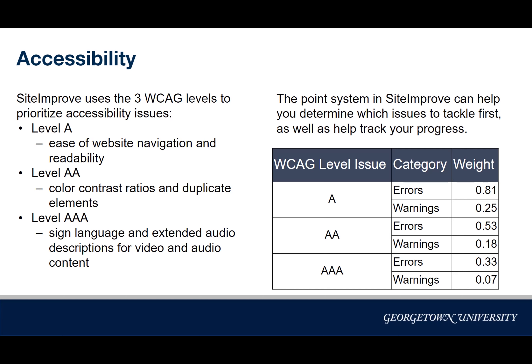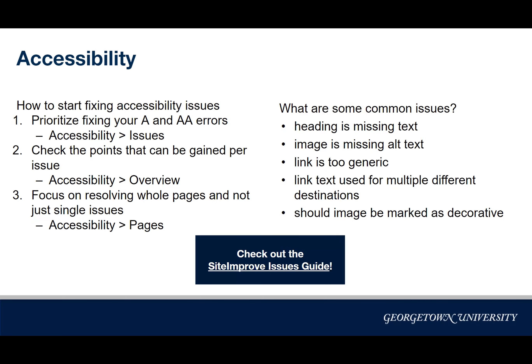Now I wanted to talk about the point system. Siteimprove uses a point system to help you track your progress on fixing issues and determine which to tackle first. The order from highest weight to lowest weight is: Level A errors, AA errors, AAA errors, then A level warnings, AA warnings, and AAA warnings. Understanding how the point system works helps us know how these different issues are being categorized and how to start fixing them.